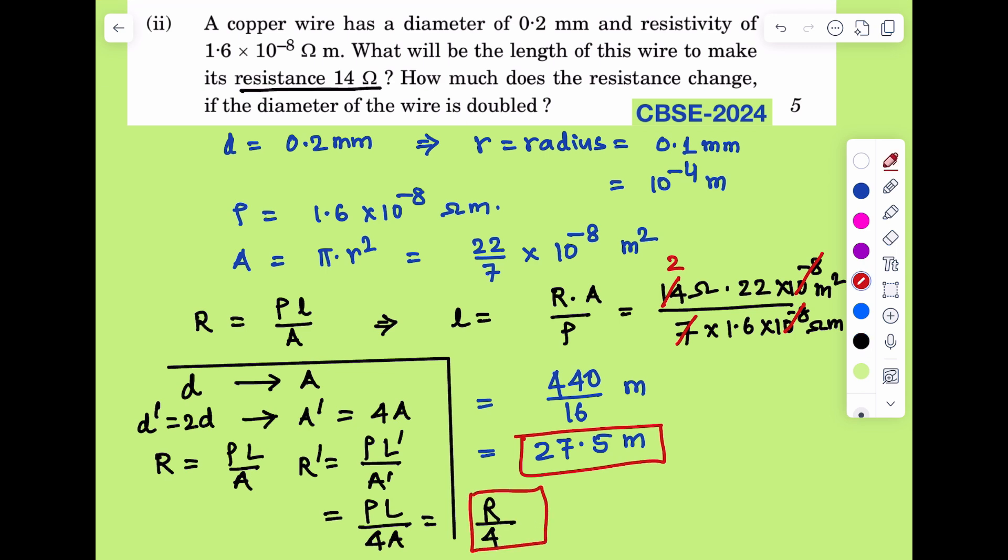The resistance will be 1/4th. The resistance will be approximately 1/4th if the diameter of the wire is doubled.